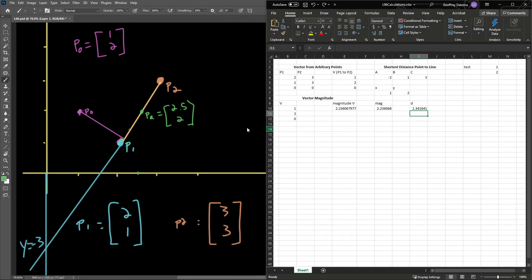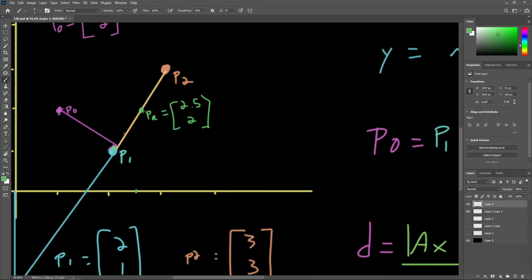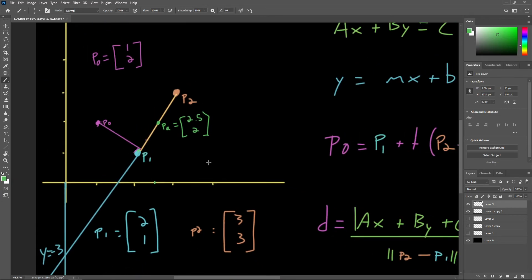Quickly plugging in the XY values for point alpha here, 2.5 on the X and 2 on the Y, we can see the distance calculation results in 0. This makes perfect sense. A point which lies on the line itself should be 0 units away from the line.